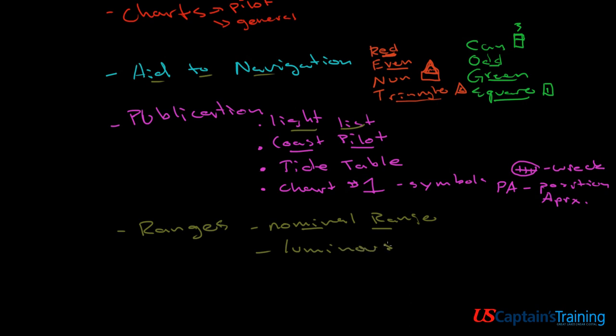And then we'll look at luminous range. And luminous range says, okay, it's the same aid to navigation, but instead of a visibility of 10 that day, there's a visibility of 2 because it's very hazy. So we'll be able to correct that nominal range to get luminous range on a day with a different visibility.